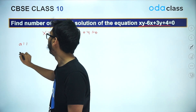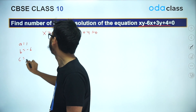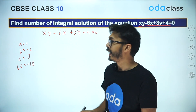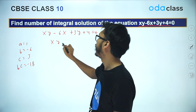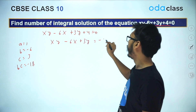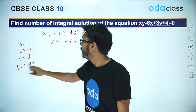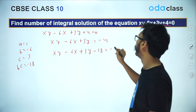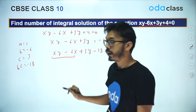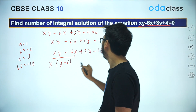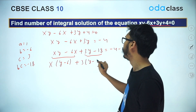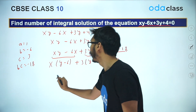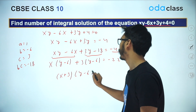First identify A = 1, B = −6, C = 3, so BC = −18. Since A = 1, multiplying by A changes nothing, so the equation stays XY minus 6X plus 3Y equal to minus 4. Adding BC = −18 to both sides: XY minus 6X plus 3Y minus 18 equals minus 22. Taking X common from the first two terms gives Y minus 6, and taking 3 common from the last two also gives Y minus 6, so the factored form is (X + 3)(Y − 6) = −22.